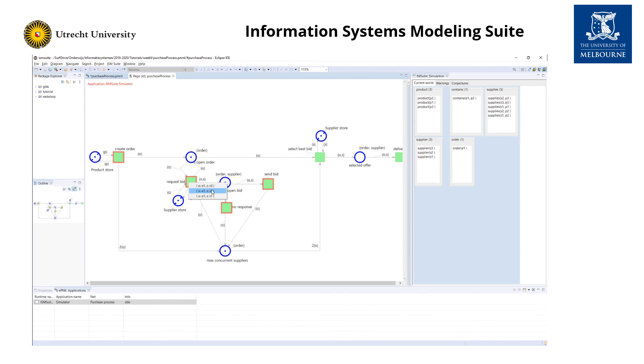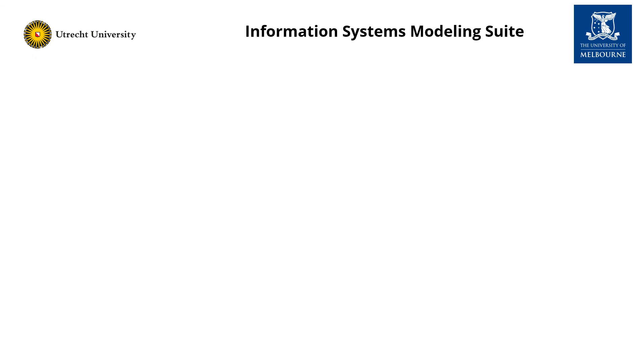Next we select S1 and we select S2. Now we can fire send bid and one for the other as well. And now select best bid becomes enabled. So we can click on it to fire it. And we can select which supplier will deliver. Well, let's say S2 delivers. And as you can see, now we have a received relation for S2 with order E1. And finally it's been delivered.